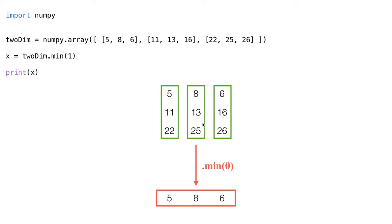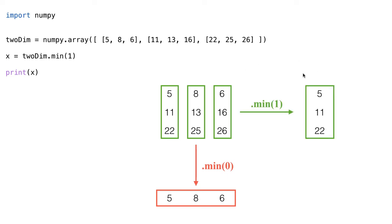If we switch over to the columns by saying .min(1), now we join the 5, 8 and 6 together and take the lowest of those values, which is 5. The 11, 13 and 16 go together and we take the lowest of those values, which is 11. And then the 22, 25 and 26 go together and we take the lowest of those values, which is 22 — to get a result that looks like this.